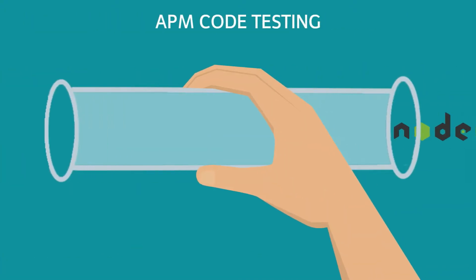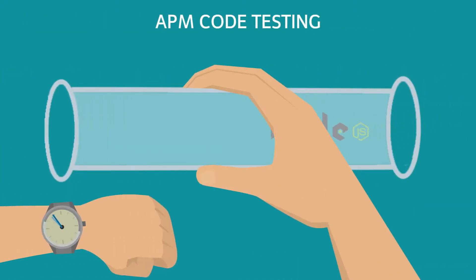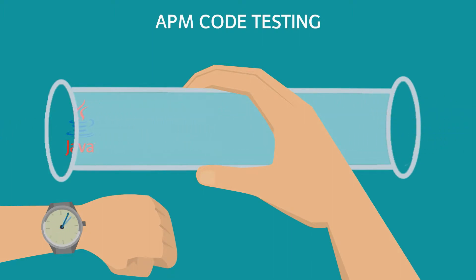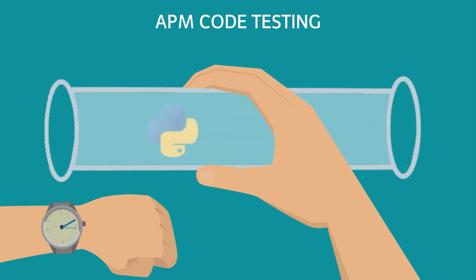The primary objective of APM is to test code against downstream performance issues before deployment. APM should be used for what it is exceptional at doing: providing transaction traces and identifying bottlenecks in code before production.